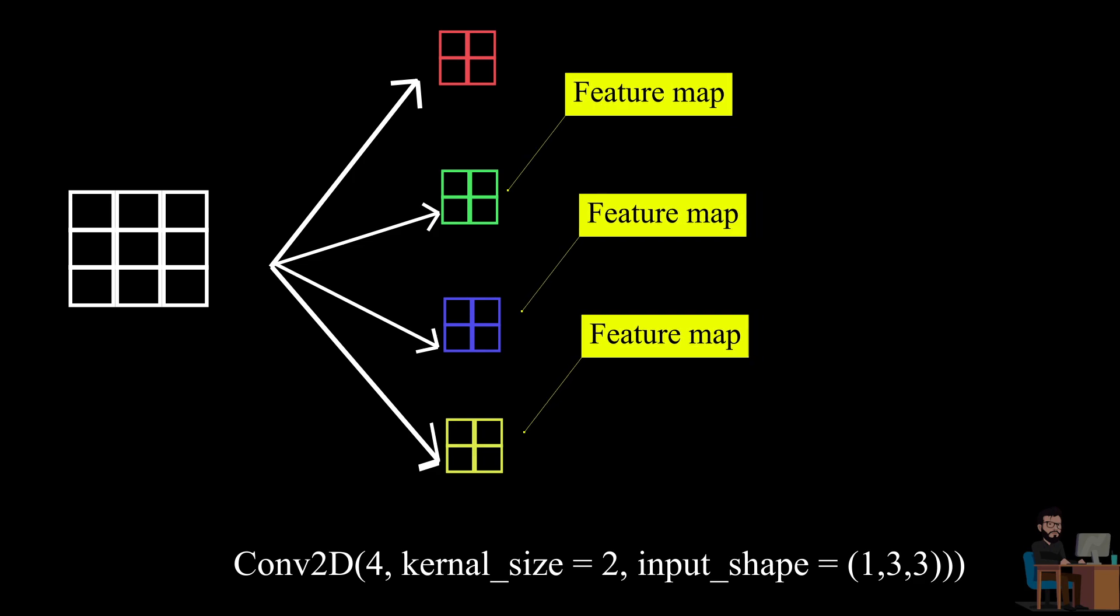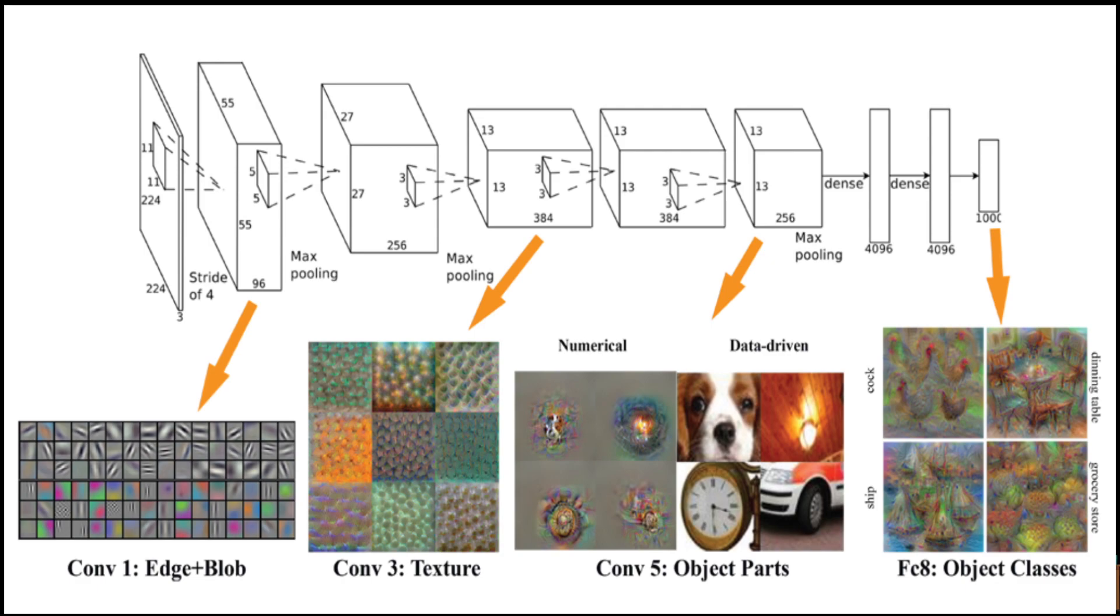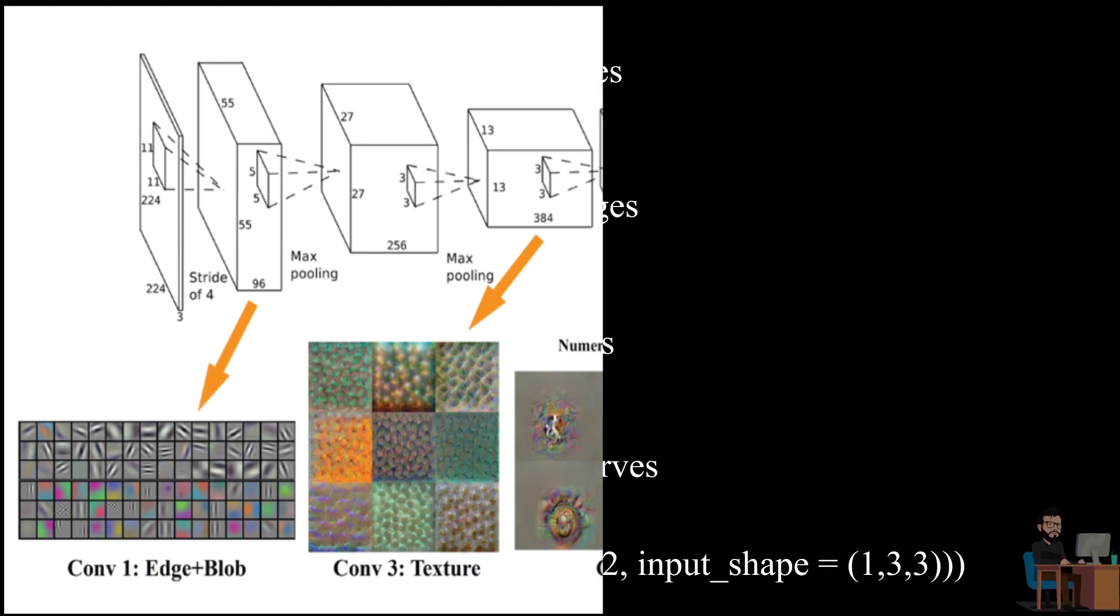Basically these matrices contain low level features of an image like lines, edges, dots, curves, and if you perform deep convolution you'll get some higher level features like shapes, objects, etc. But for now let's stick with this.